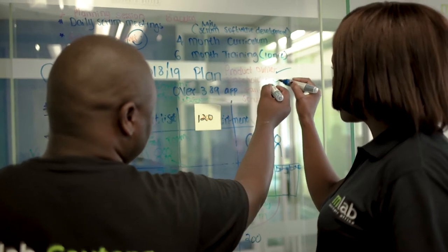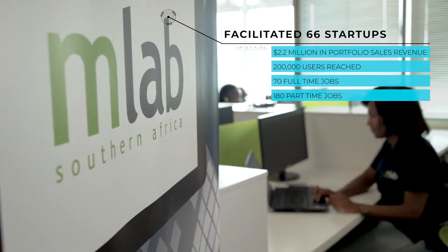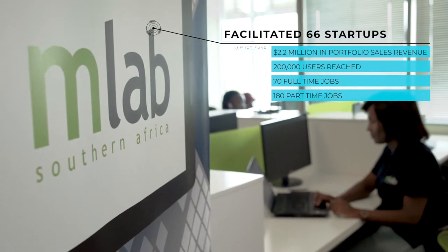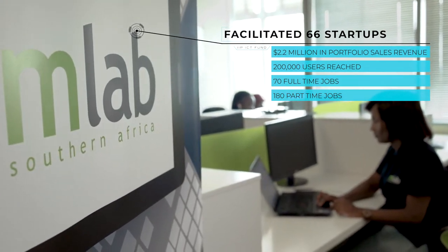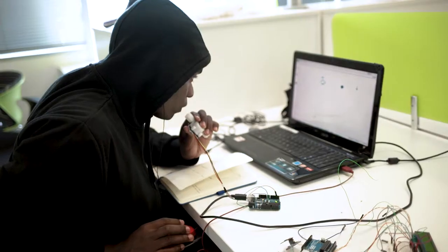Over the last year, for example, we've trained over 120 young people. The MLAB has played a critical role in the South African mobile ecosystem, both bringing in young people, matching them with industry, making sure that there is excitement being built and an understanding that STEM is an important area for the economy to grow.